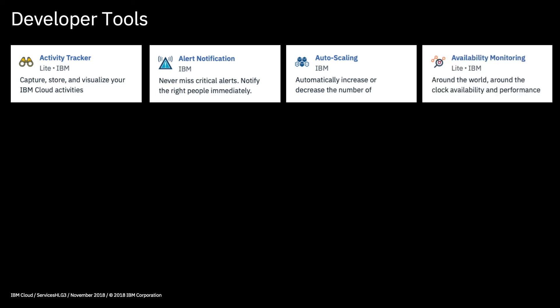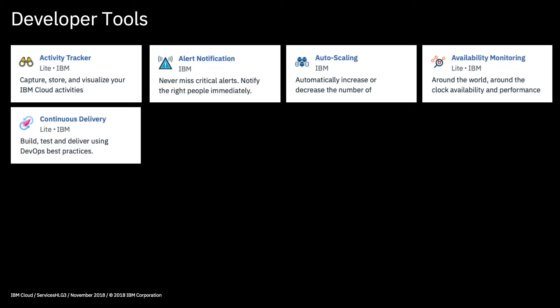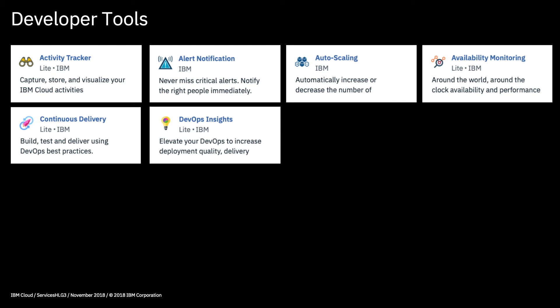Availability Monitoring helps DevOps teams to ensure that their apps are available and meeting performance expectations. Continuous Delivery is used to automate builds, unit tests, deployments, and so on — when you push new code to an application, Continuous Delivery can carry out these tasks automatically, which saves time and creates consistency in the release process. DevOps Insights is a tool that lets you view test results and trend information about your builds and deployments, helping you make sure that quality code is delivered through to production.